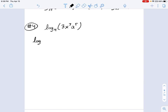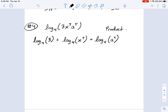Let's start this off using the product rule. I'm going to say the logarithm base 4 of 3, that's the first one, plus the logarithm base 4 of x to the 7th, that's the second one, and the logarithm base 4 of a to the 5th, that's the third one. This was all accomplished using the product rule.